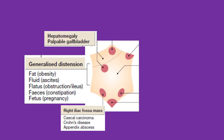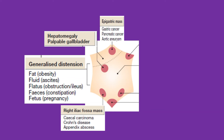In the right upper quadrant, it could be hepatomegaly or a palpable gallbladder due to different reasons. In the epigastric area, it could be gastric cancer, pancreatic cancer, or an aortic aneurysm.